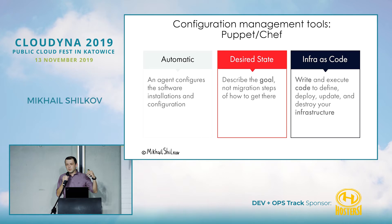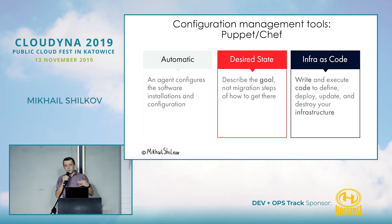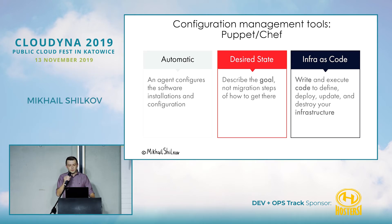You write a bunch of files in machine-readable format — it can be configuration or real code — and you describe what kind of environment or configuration you want on your server. Then you install an agent on the server, and the agent takes care of updating the configuration to match what you described. That's why it's called desired state configuration: you describe the desired state, and the tool takes care of bringing your previous state to the new desired state.